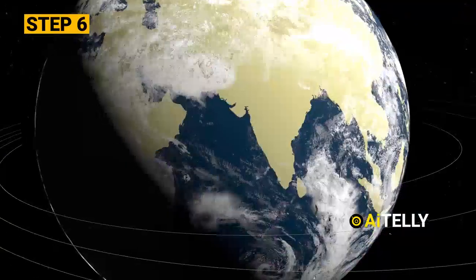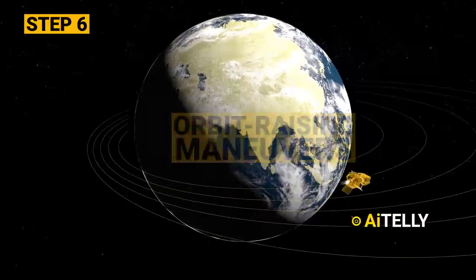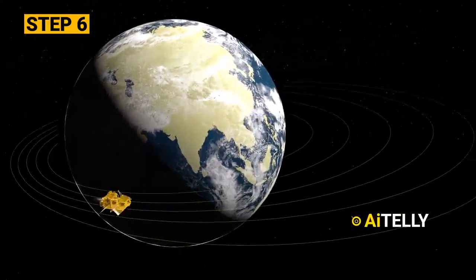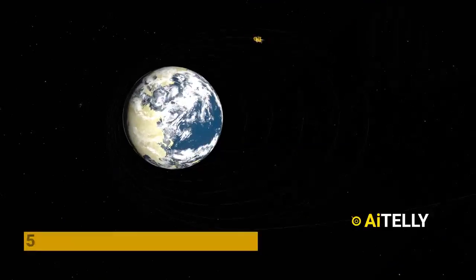Step number six, it is here the module will commence orbit raising maneuvers. After orbiting for a few hours, the module will shift orientation toward the Sun. It will make around five orbits around the Earth.